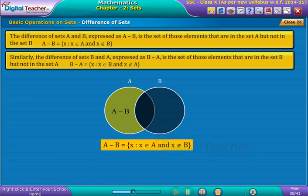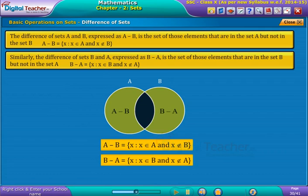Similarly, the difference of sets B and A, expressed as B minus A, is the set of those elements that are in the set B but not in the set A.